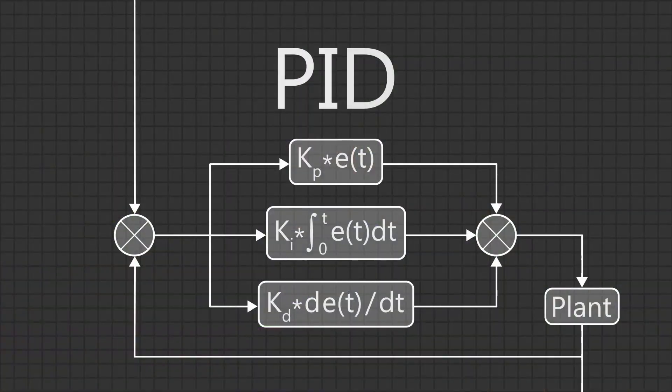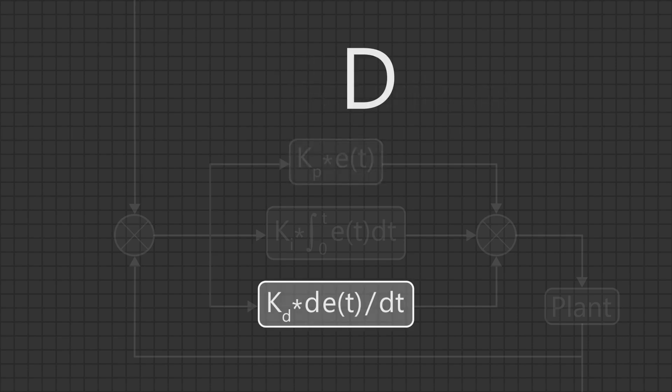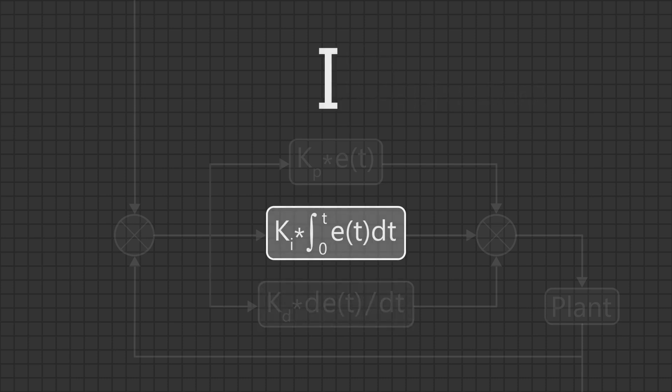We use a very popular feedback controller called PID. The P stands for proportional because it powers the motors in an amount proportional to the error. The D term stands for derivative because the derivative of position is velocity, and the D term slows down the robot if it's going too fast but speeds it up if it's going too slow.